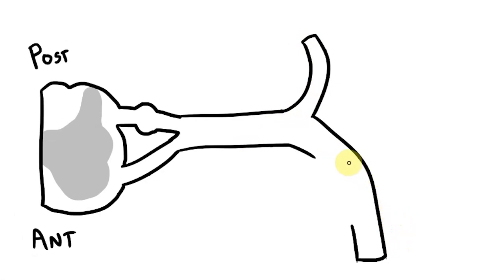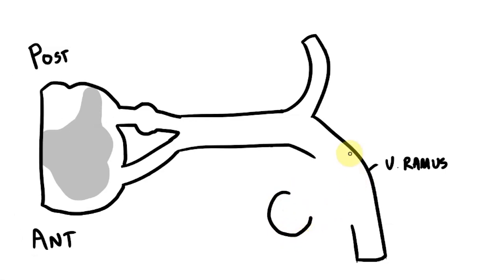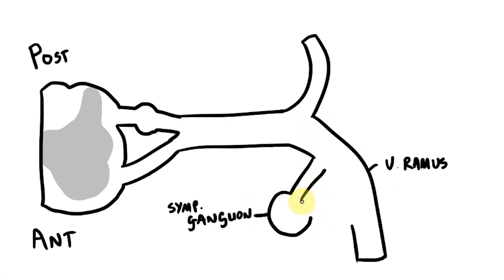For this drawing, follow exactly the same steps as before but leave this part of the ventral ramus blank. Next, draw a semicircle next to the ramus and this will be our sympathetic ganglion. Finally, between the ramus and the ganglion are two small branches. These branches allow the ventral ramus and ganglion to communicate with each other and are known as the rami communicantes.